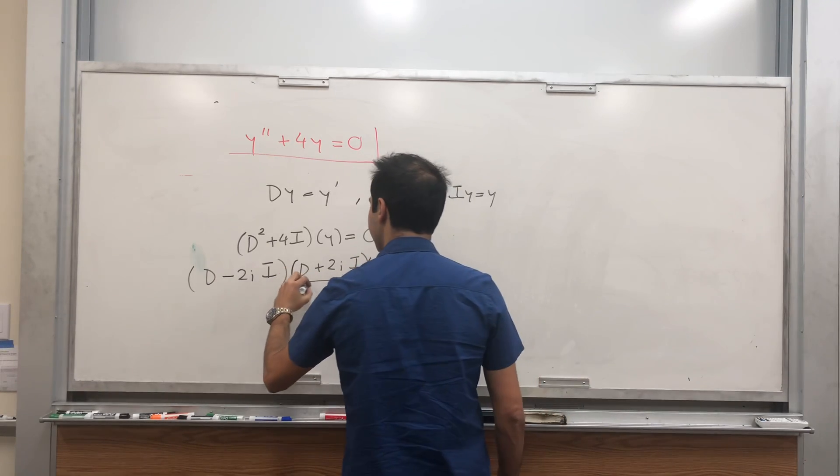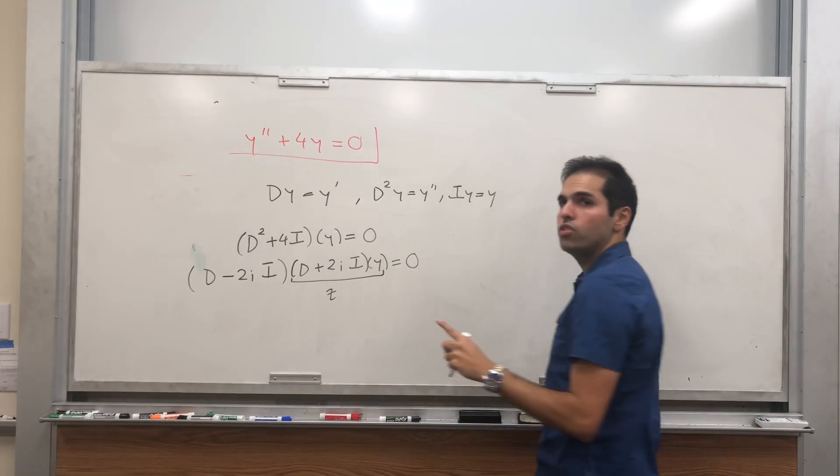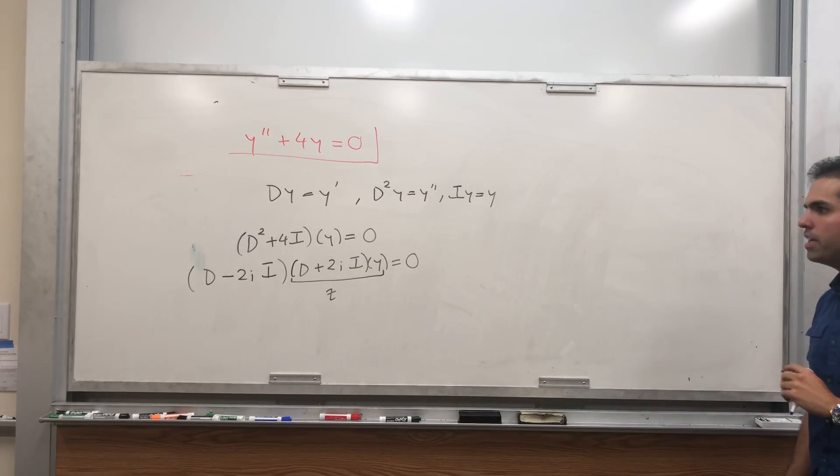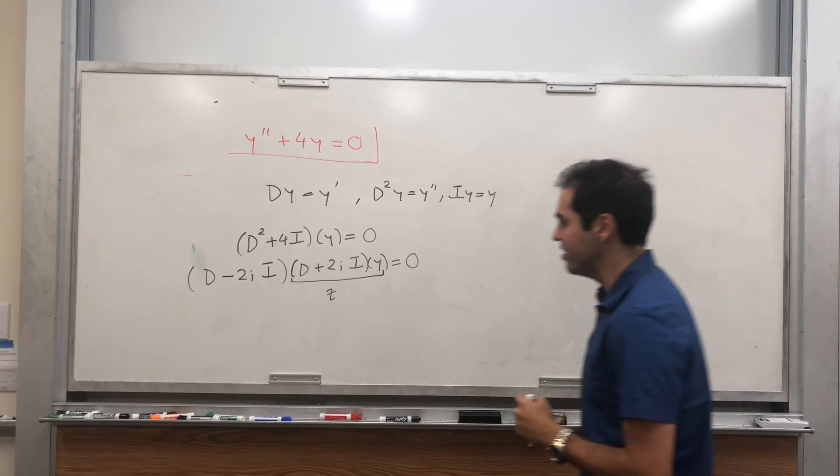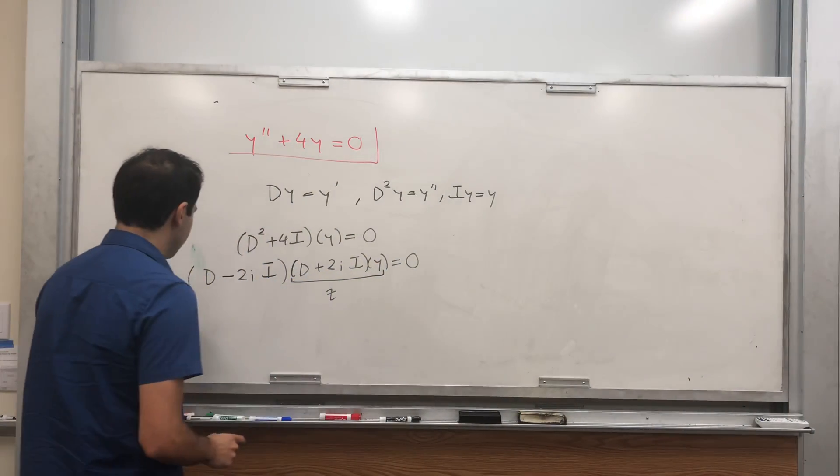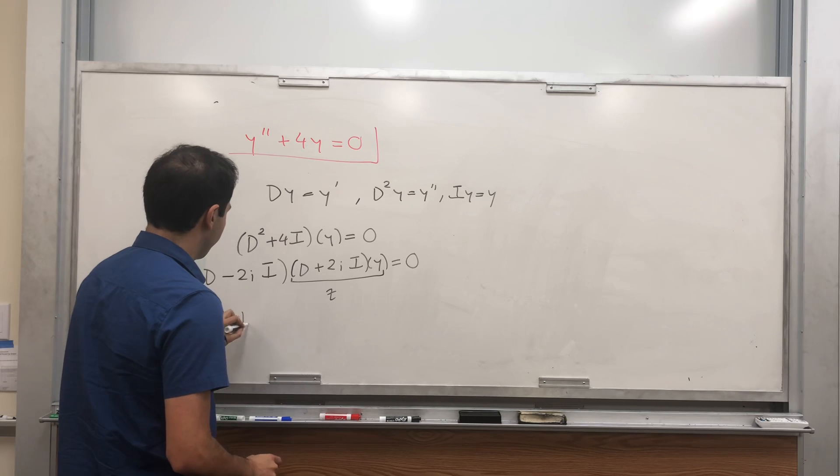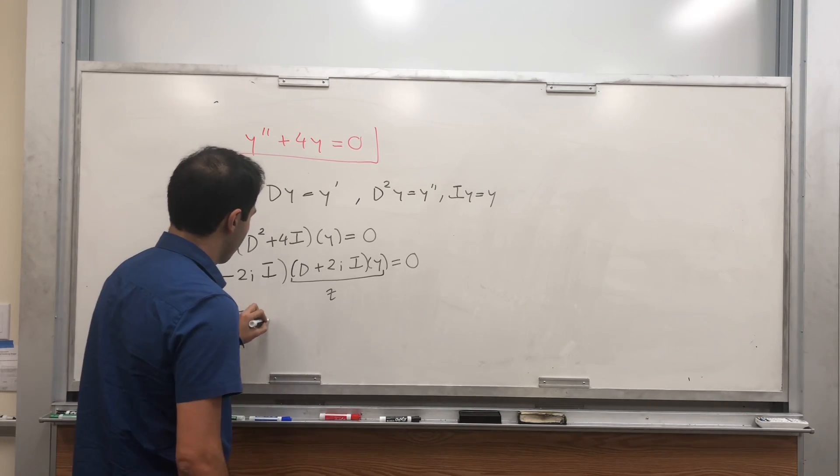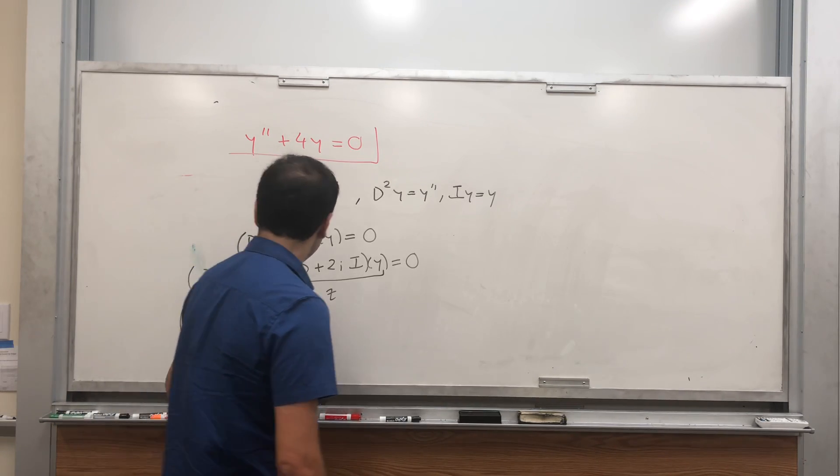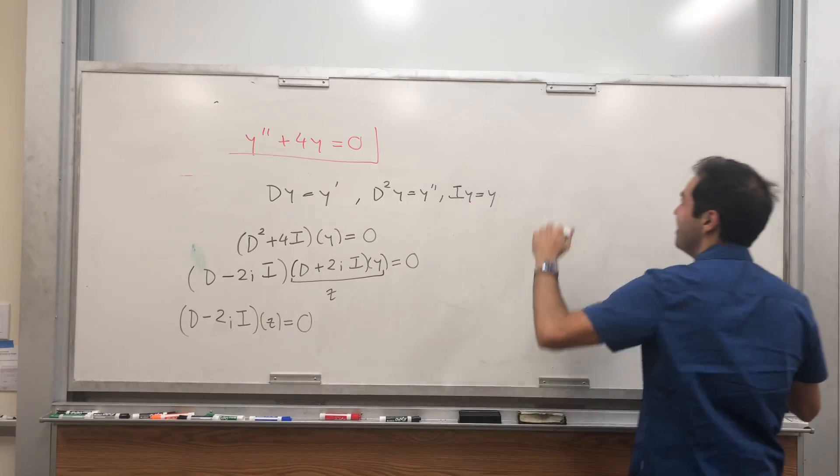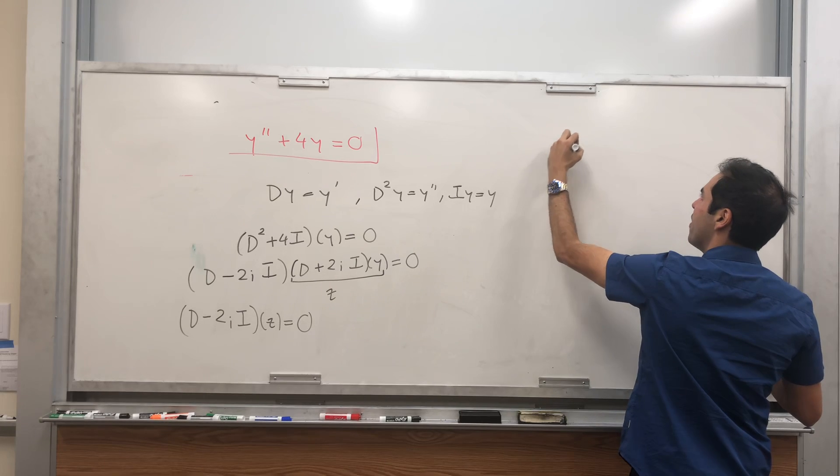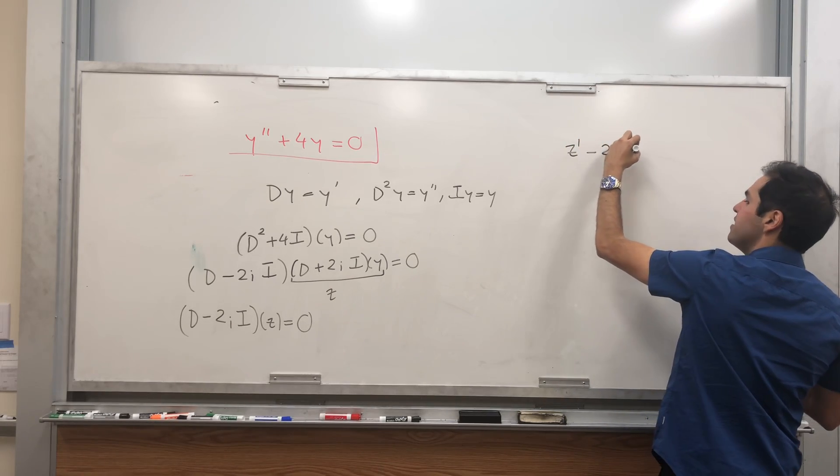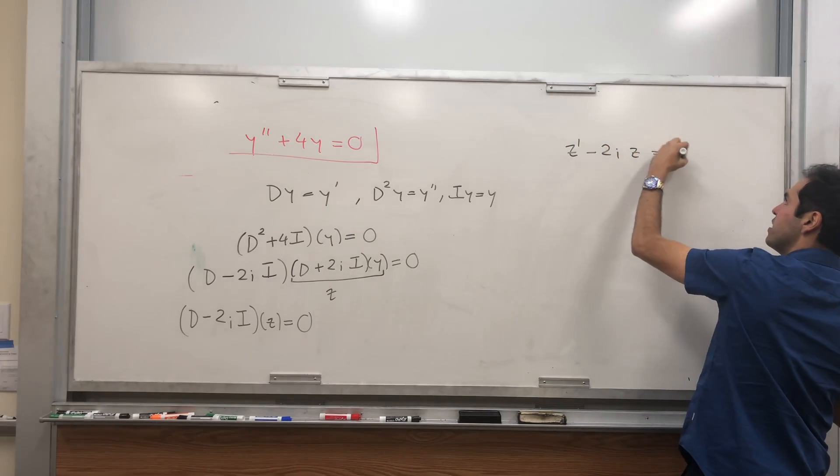And again, let's call this z, and notice because of the 2i, z will be a complex function. And then what we get is (D minus 2i)z equals zero. So z prime minus 2iz equals zero.